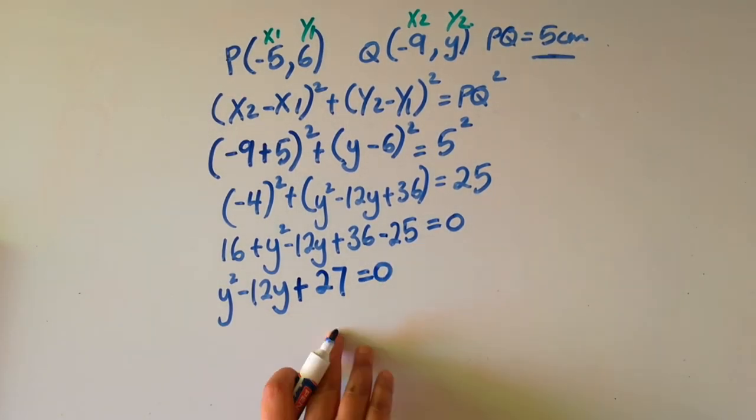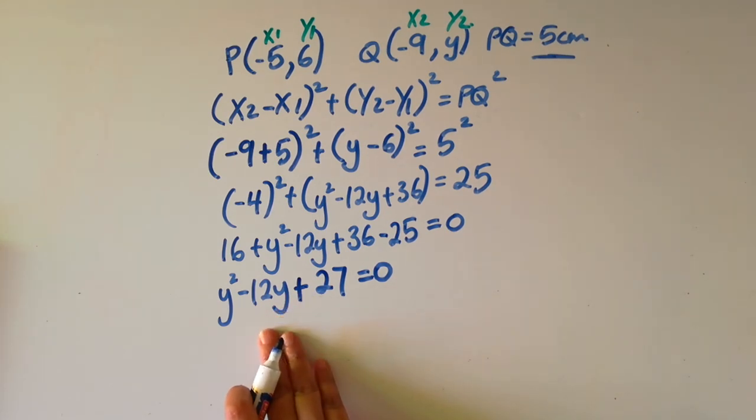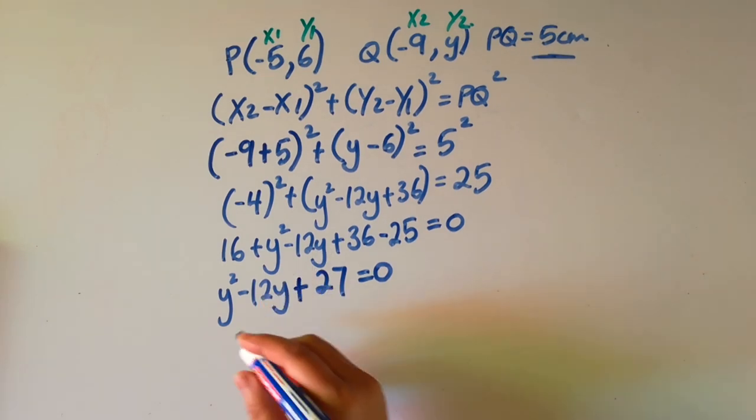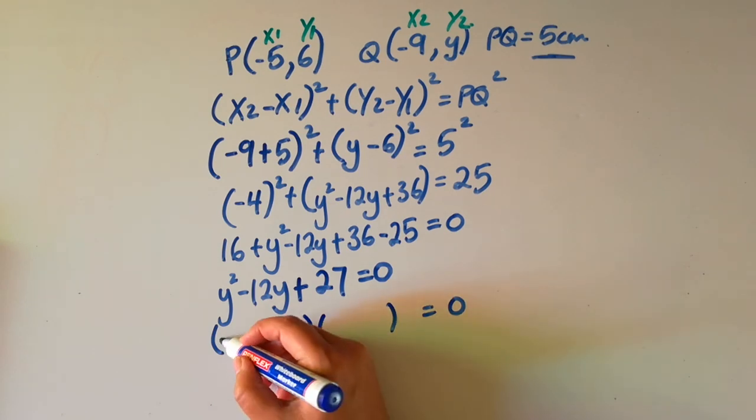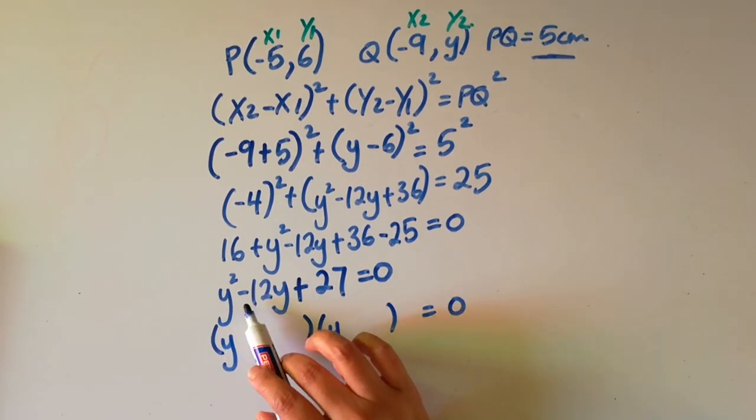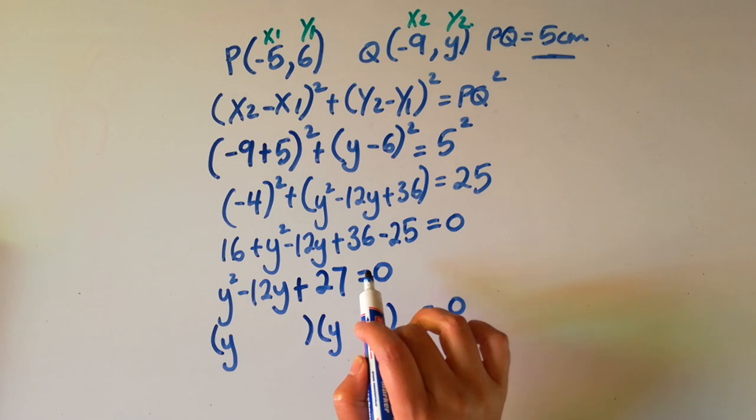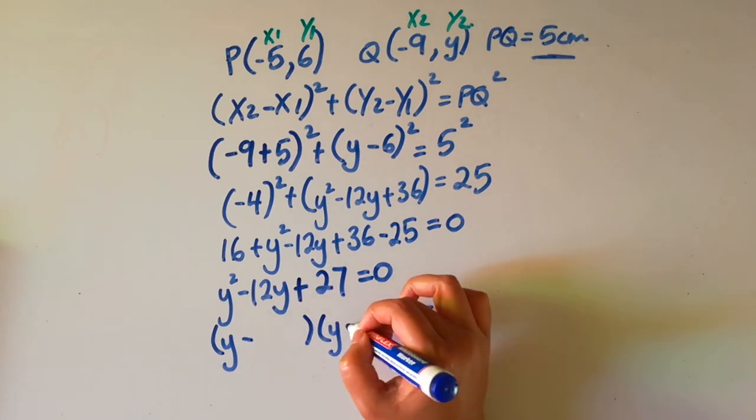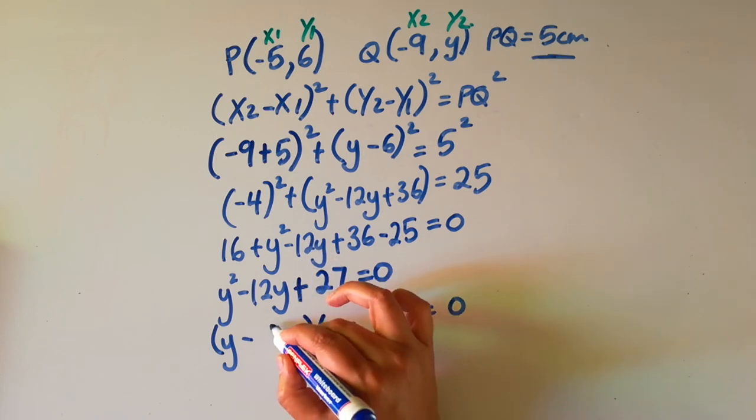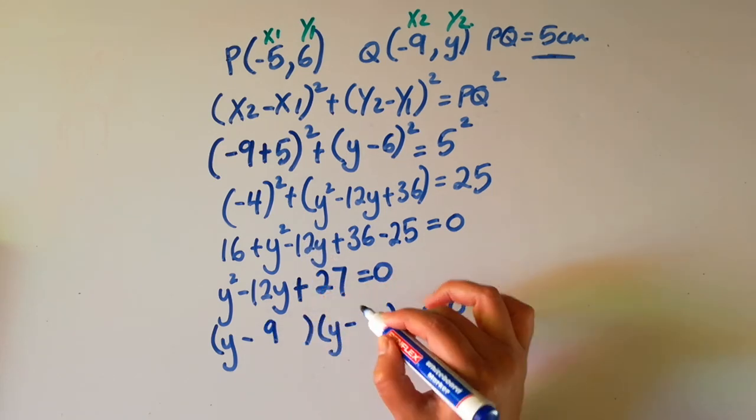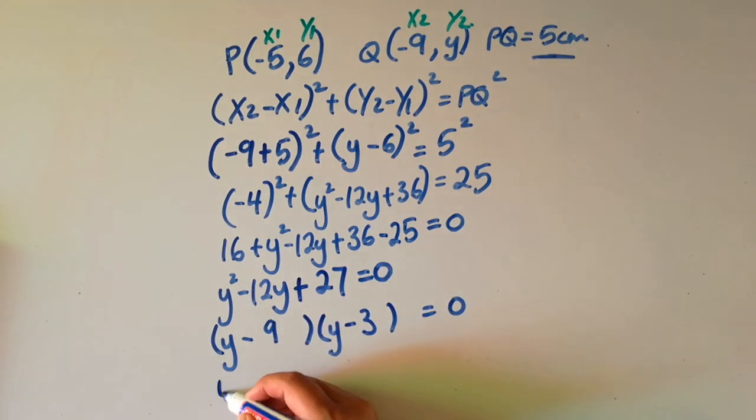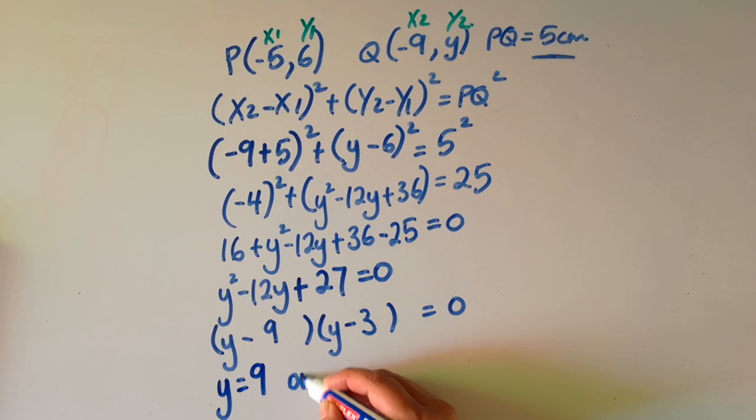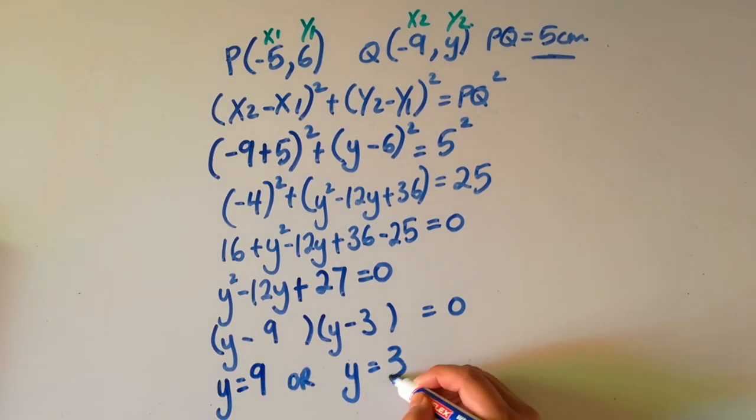We want to solve for y, but as we can see here we've got a trinomial, and when we solve for x or y and we have a trinomial, we know we have to factorize. So I open up my two brackets, put my y, put my y. I've got minus 12y plus 27, so I'm going to have minus, minus. And if we factorize that, we'll get (y minus 9)(y minus 3). From here we can see that y is equal to 9 or y is equal to 3.